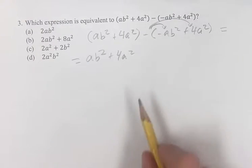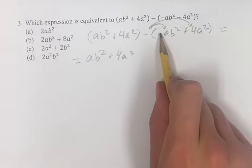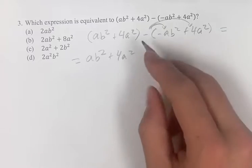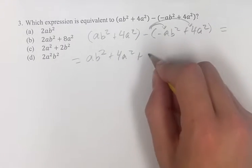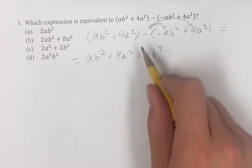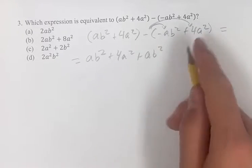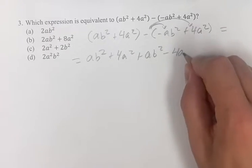So for this one, we have minus negative ab squared. Minus negative, that's going to be positive, so plus ab squared. And here we have minus positive 4a squared, that's minus 4a squared, so we just add that on right there.